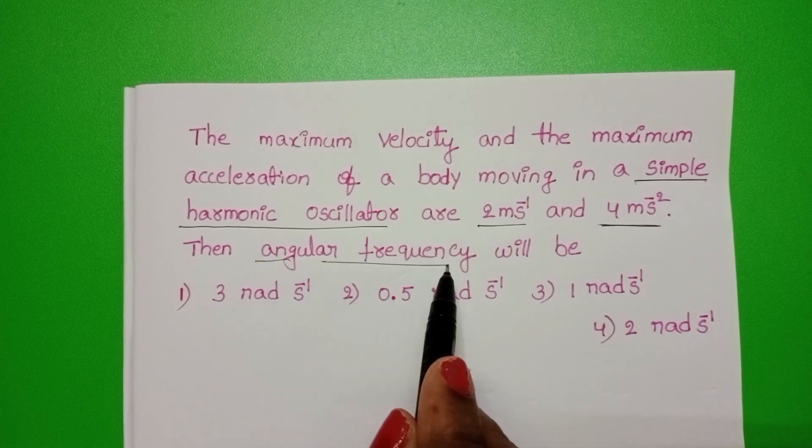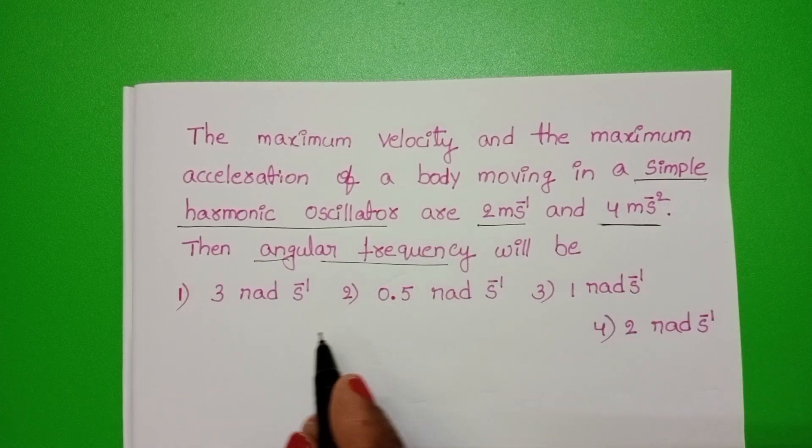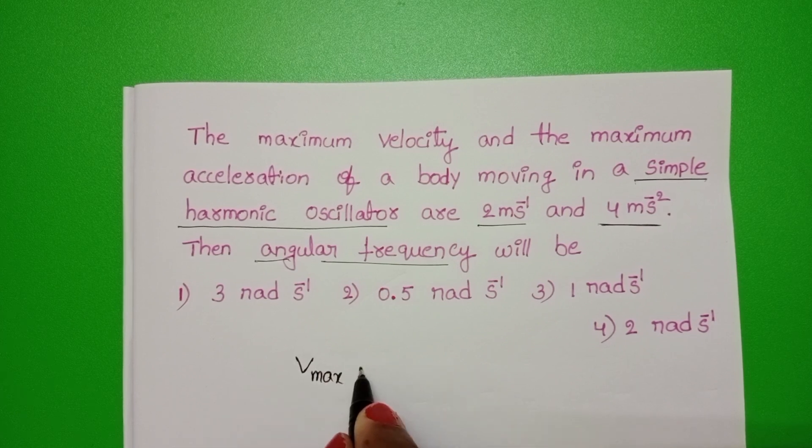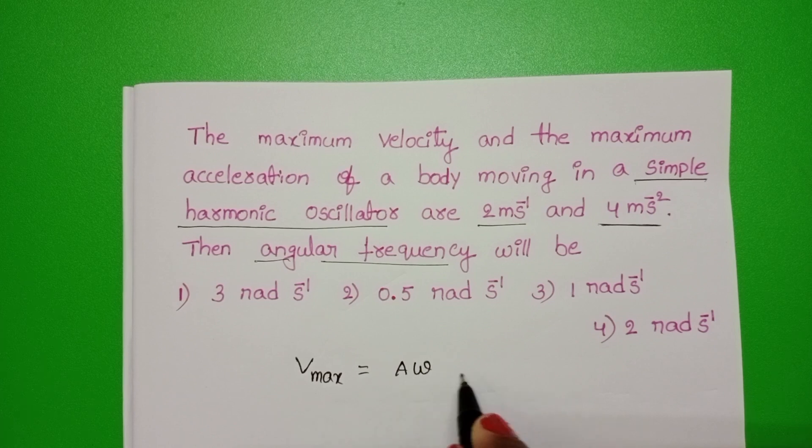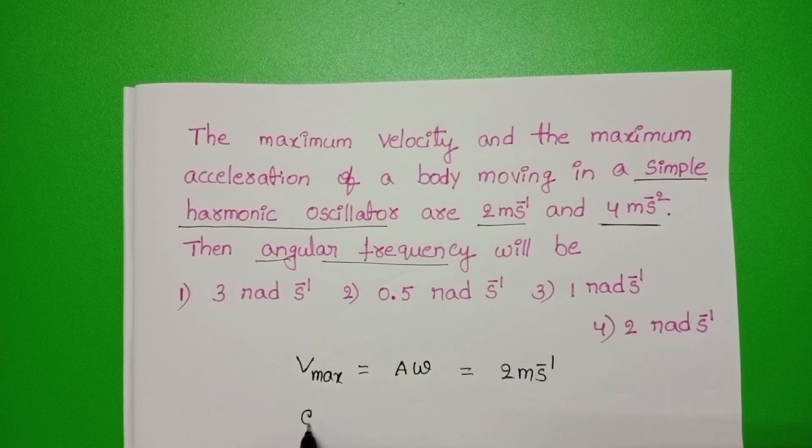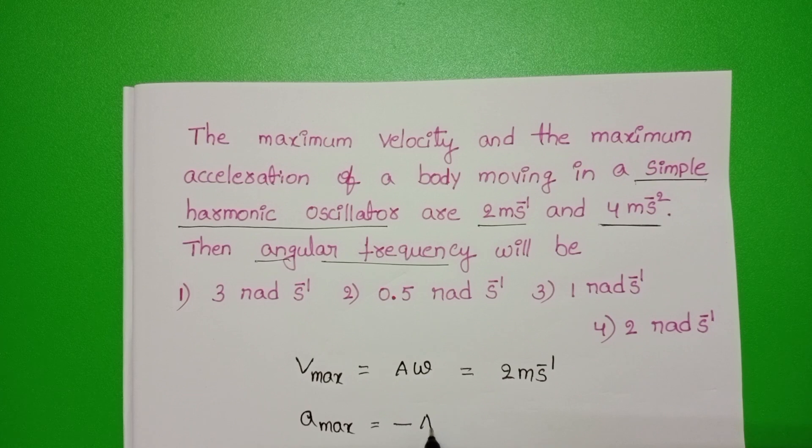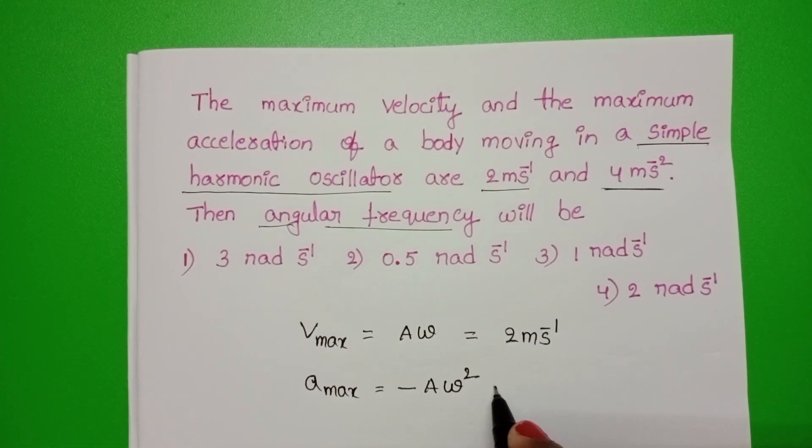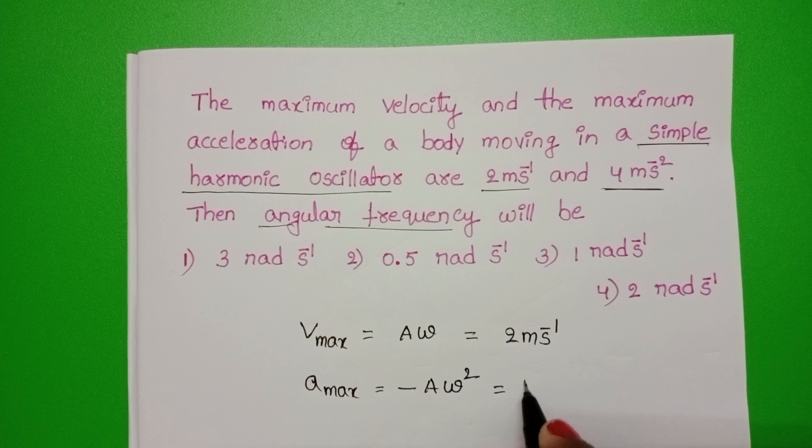The angular frequency will be. In simple harmonic motion, maximum velocity formula V_max equals A omega. Given maximum velocity is 2 meter per second, and maximum acceleration formula is minus A omega square, and given maximum acceleration is 4 meter per second square.